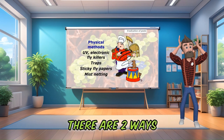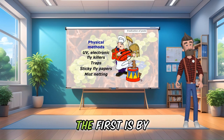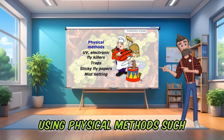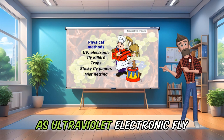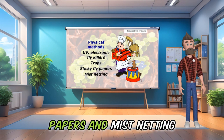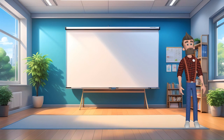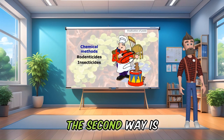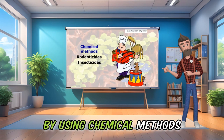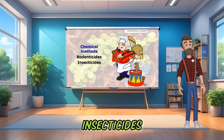There are two ways we can control pests. The first is by using physical methods such as ultraviolet electronic fly killers, traps, sticky fly papers, and mist netting. The second way is by using chemical methods such as rodenticides and insecticides.